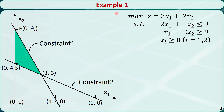Let's check this example. It's a maximization problem with two variables. We can use the graphic method to solve it, and the optimal point is (0, 9), z* is equal to 18. We have a greater than or equal to constraint, but we will use the Big M method to verify this optimal solution.